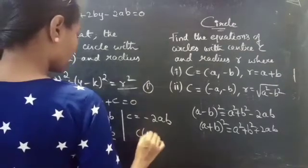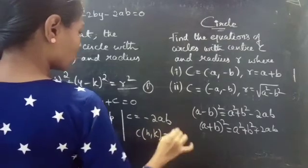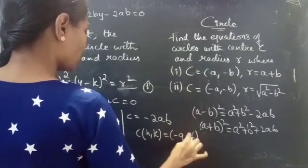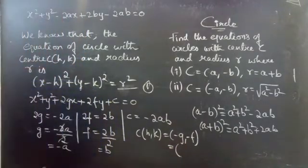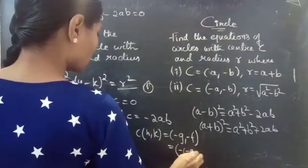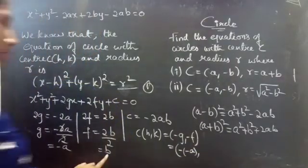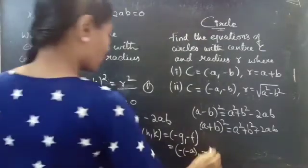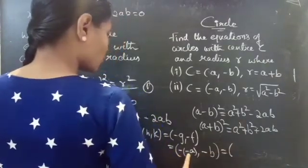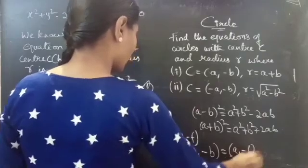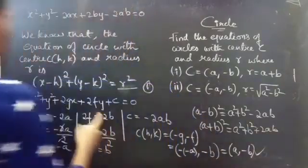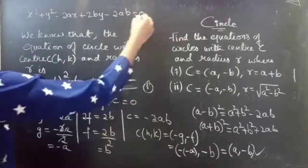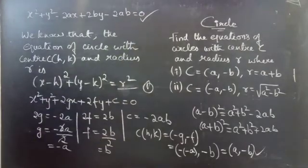We know that center (h, k) equals (minus g, minus f). So this equals minus of minus a, comma minus b, which gives us a comma minus b. This matches our given center, so the answer is correct.